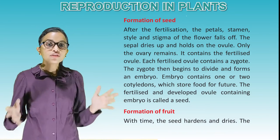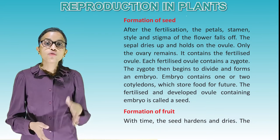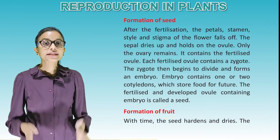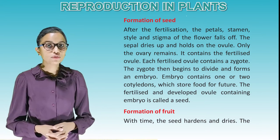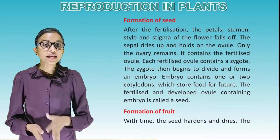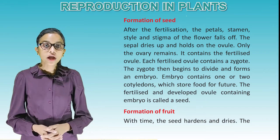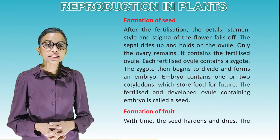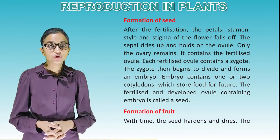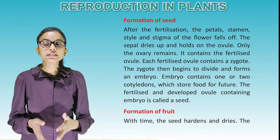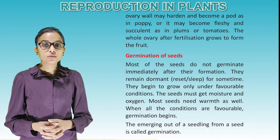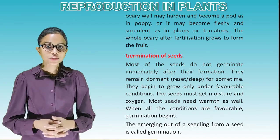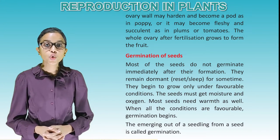Formation of seed: After fertilization, the petals, stamen, style and stigma of the flower fall off. The sepals rise up and hold the ovule. Only the ovary remains, containing the fertilized ovule. Each fertilized ovule contains a zygote, which then begins to divide and form an embryo. The embryo contains one or two cotyledons which store food for the future. The fertilized and developed ovule containing the embryo is called a seed. With time, the seed hardens and dries. The ovary wall may harden and become a pod as in poppy, or become fleshy and succulent as in plums or tomatoes. The whole ovary after fertilization grows to form the fruit.